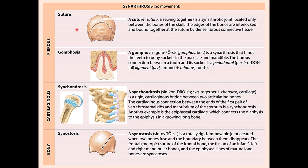Gomphosis joints are located in the jaws, where teeth are inserted into sockets of the maxilla and mandible through ligaments of dense regular connective tissue. Other structures also support this connection. If infection occurs in this area, it can destroy these ligaments — as seen in periodontitis — causing the tooth to fall out. Osteoporosis can also weaken the bone, leading to the same result.